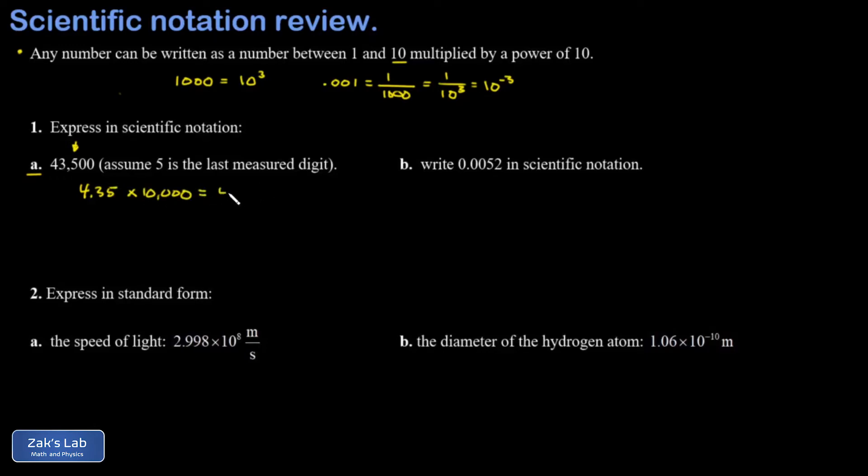But 10,000 can be written as a power of 10, and I've got my answer: 4.35 times 10 to the fourth. Now why does it matter that we were told that 5 was the last measured digit? Well, the standard notation is ambiguous. When I see 43,500, I can't tell whether that number was rounded to the hundreds place or the tens place or even the ones place.